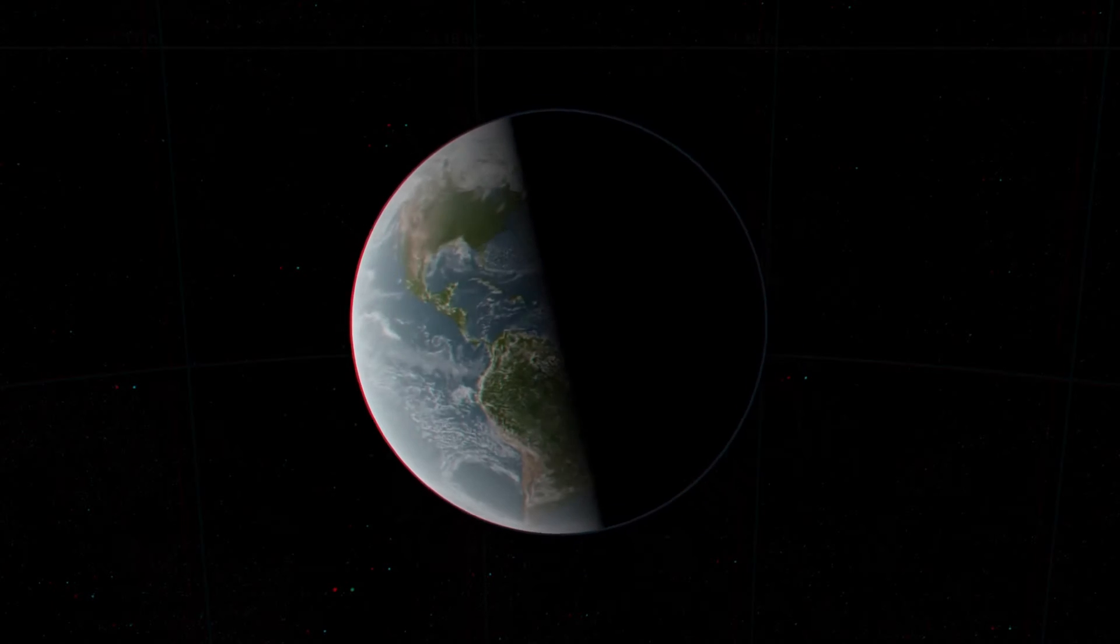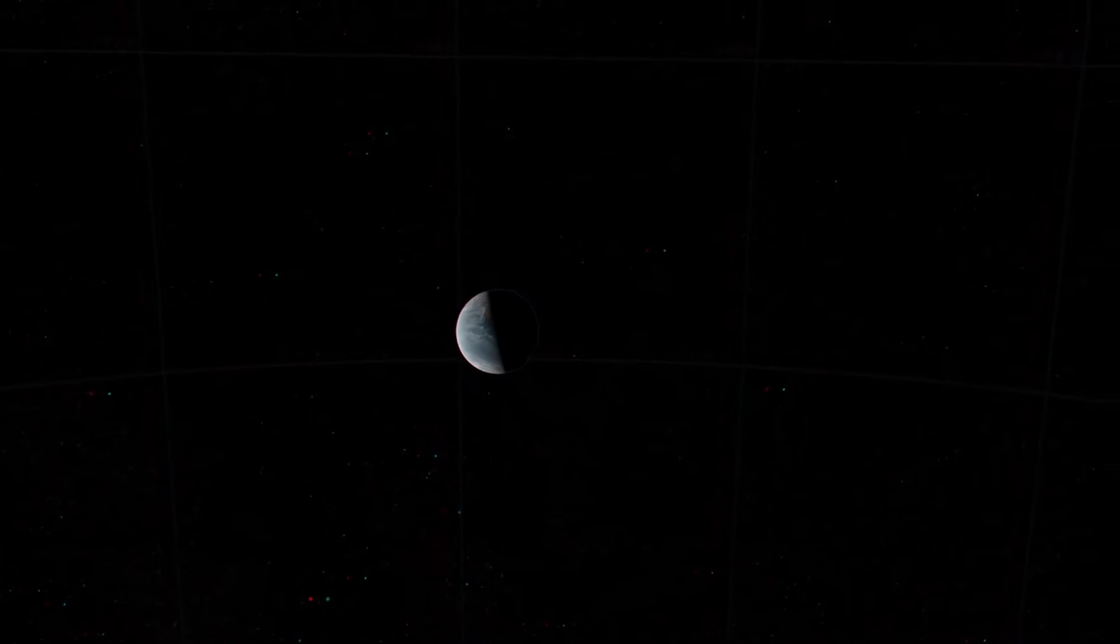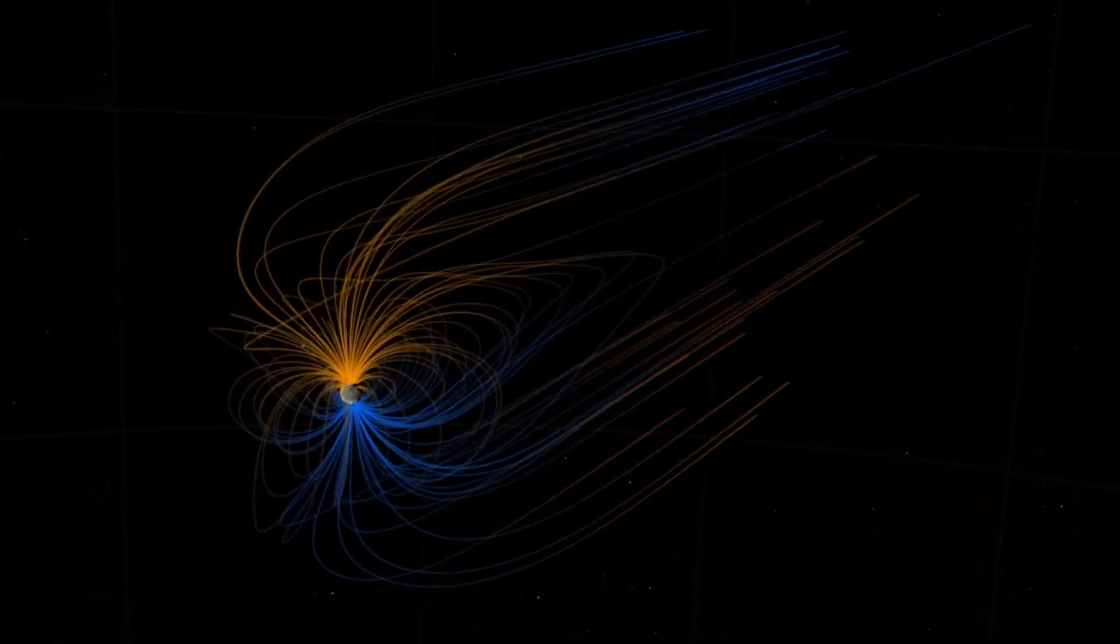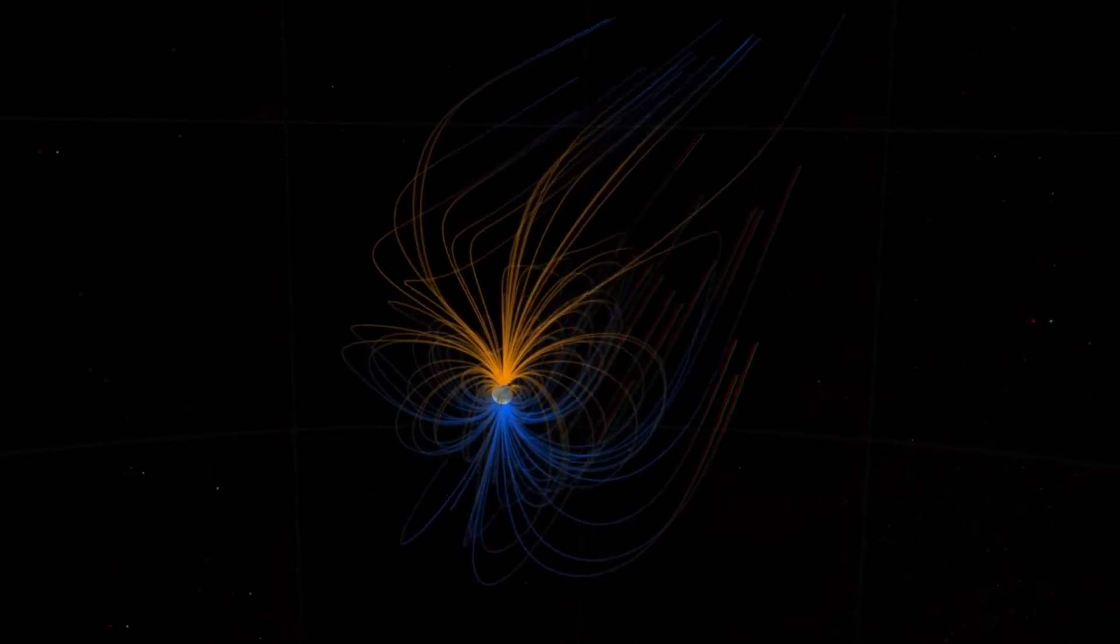Earth is surrounded by an invisible force field known as the geomagnetic field, which protects humans and other life forms from the harmful effects of space weather. Without this field, life on Earth would not exist.